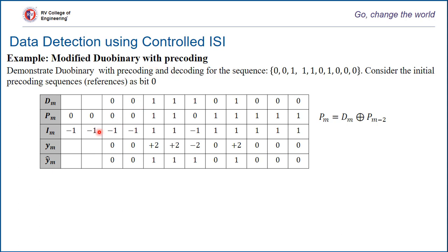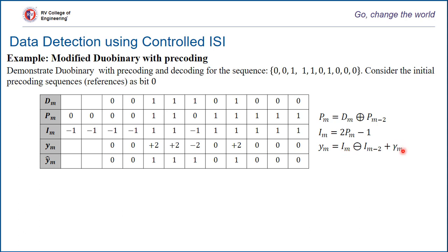The modified duobinary with pre-coding sequence is thrown into the channel. Without any AWGN — just the controlled ISI introduced at the transmitter itself — we have taken the addition of two binary symbols, which creates the inter-symbol interference. Without any AWGN, this is the sequence obtained at the receiver. The demodulation combination is subtraction of im with im minus 2, i.e., modulo-2 subtraction of two bits separated by two positions.